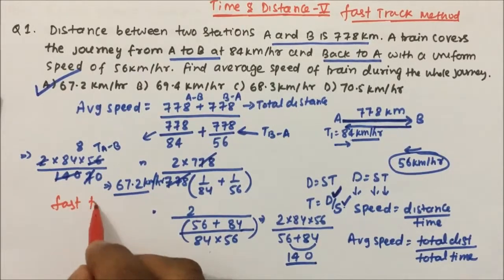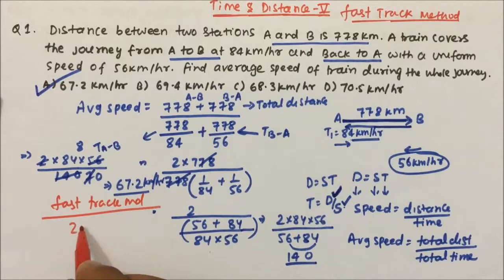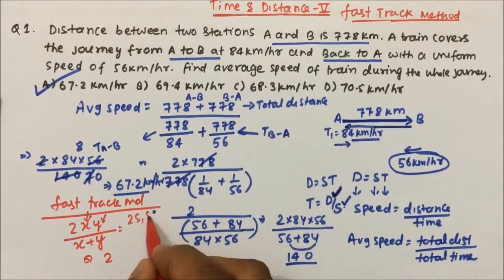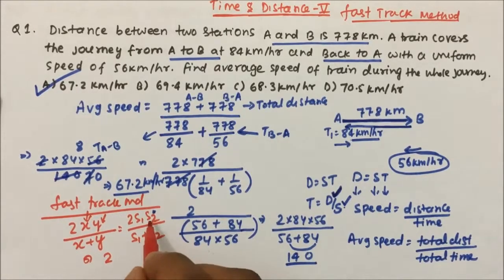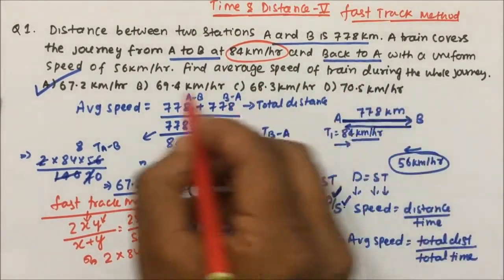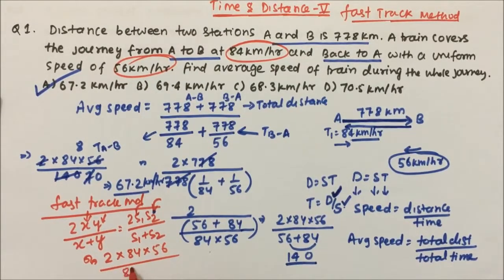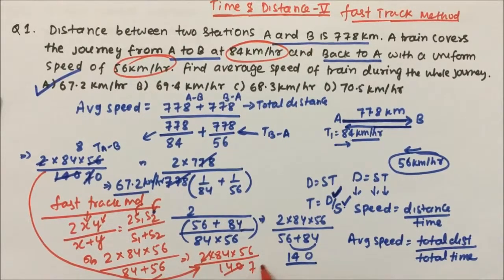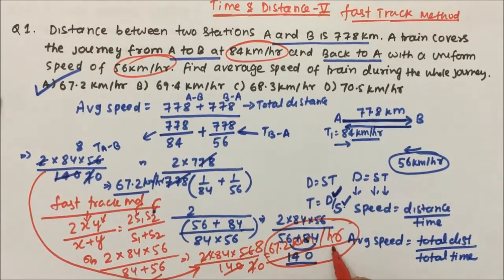Now what is the fast track method? Using the fast track method we use the formula 2xy divided by x plus y, which can also be written as 2·S1·S2 divided by S1 plus S2, where S1 is speed 1 and S2 is speed 2. So 2 into 84 into 56 divided by 84 plus 56, which is 140 — and we get the same answer: 67.2 km per hour.